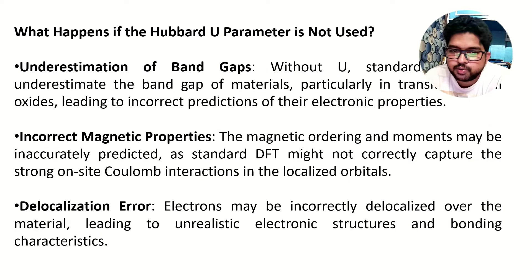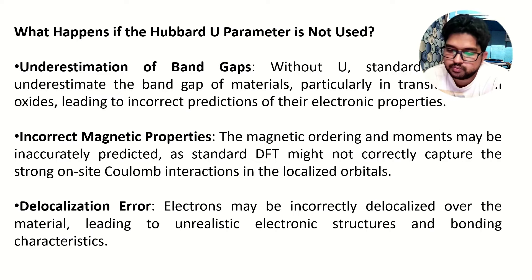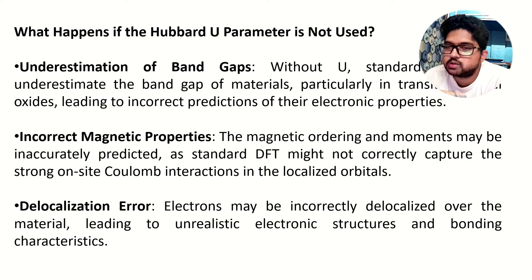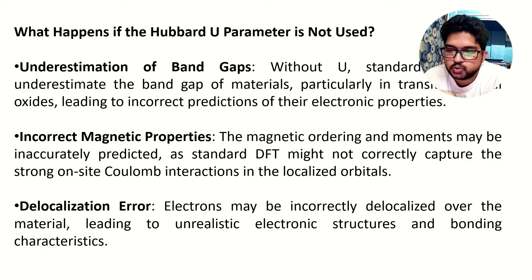Now, what will happen if you are not using the U-parameter? In those cases you won't get an accurate band gap because DFT underestimates it, and if you are not using the U-correction it will again give you an inaccurate value of band gap. If you are not using the U-correction, your magnetic properties and the delocalization — everything will be affected. In summary, whenever you are dealing with transition metal elements or a localized system with D and F orbitals, you must use DFT+U correction.